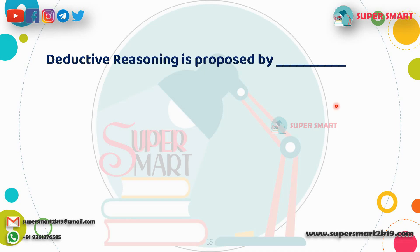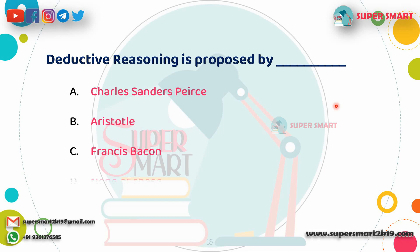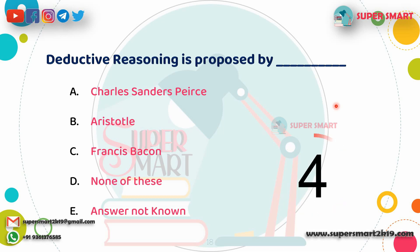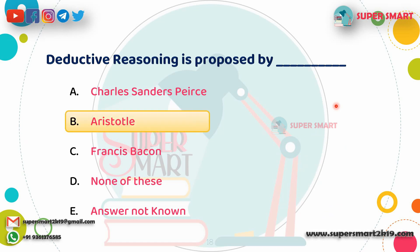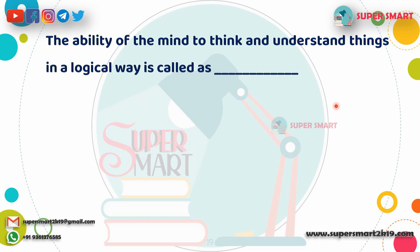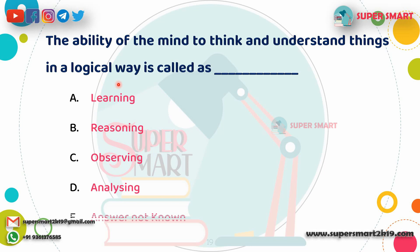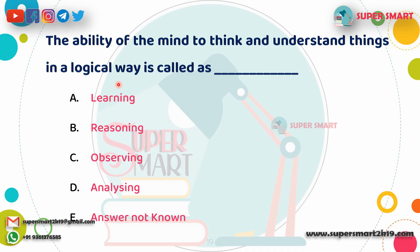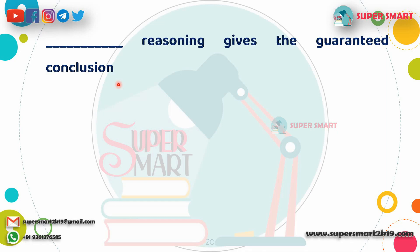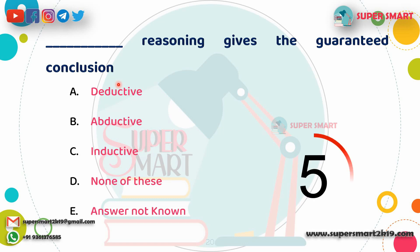Who proposed deductive reasoning? Answer: Aristotle. Next question: The ability of the mind to think and understand things in a logical way is called — learning, reasoning, observing, or analyzing? Answer: Reasoning. Next: Which reasoning gives a guaranteed conclusion? Answer: Deductive reasoning.